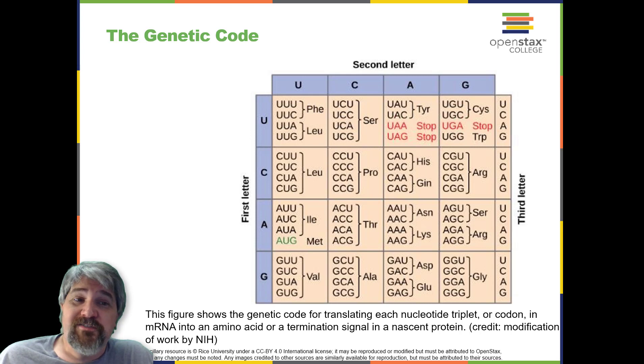Translation of the mRNA template converts nucleotide-based genetic information into a protein product. Protein sequences consist of 20 commonly occurring amino acids. Therefore, it can be said that the protein alphabet consists of 20 letters.